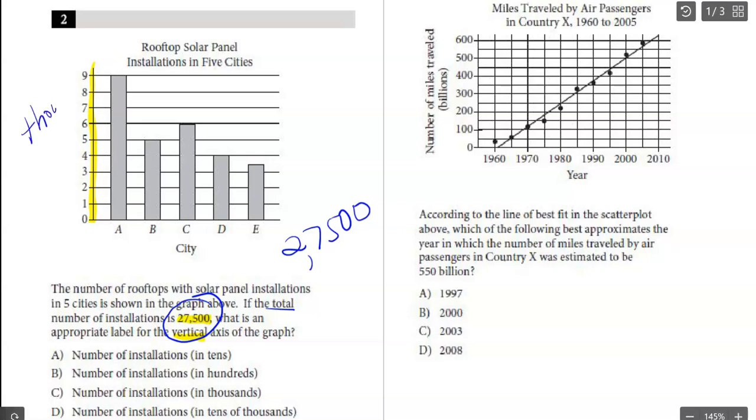For it to total up that much, I think the correct answer here is going to be C, because that's the only number that's going to give all five cities a total of 27,500.